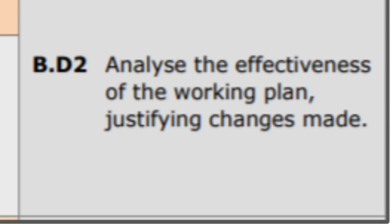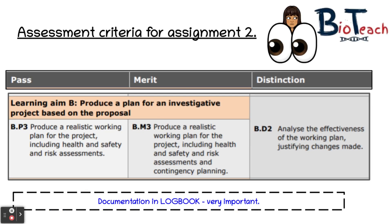For the distinction part you need to reflect on your plan and justify any changes that you made. For example, if you needed to allow more time to undertake the experiment, you would state that as a change and justify why you needed more time. Or if you needed to use another method or piece of apparatus, explain the situation and say why the change was made. This will all be presented in the reports you write for this assignment as well as your logbook.